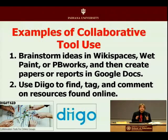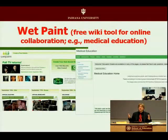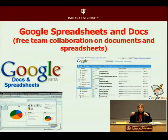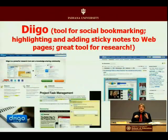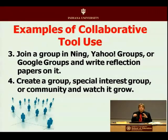Look at the technologies out there and brainstorm ideas you could use — like a wiki such as WikiSpaces, PBWorks, or Wet Paint. Once you've brainstormed with your students, maybe have them create products within a tool like Google Documents and spreadsheets, or go to the internet and use Diigo to tag and flag resources they've found. So brainstorming in a wiki, then taking those divergent ideas and making them convergent — perhaps using Google Documents to report on what they found, or having them highlight, tag, and use sticky notes in Diigo for social bookmarking.